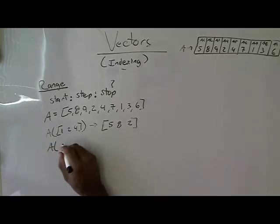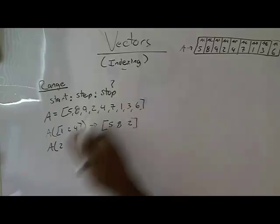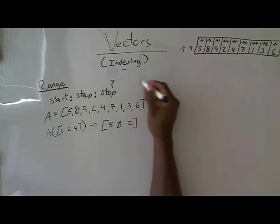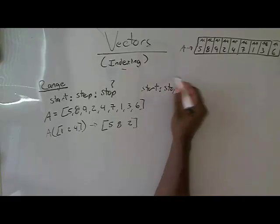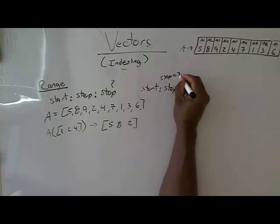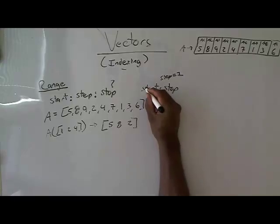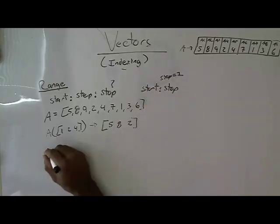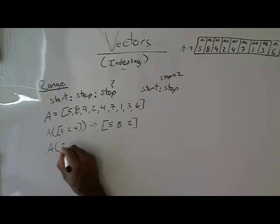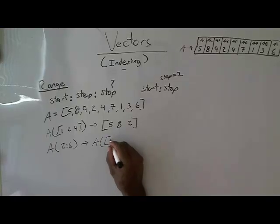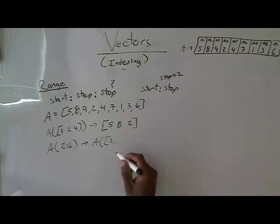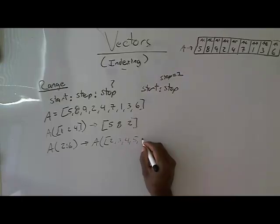What if I said give me A at—now keep in mind the other way to do the range is to do start colon stop. And that assumes that the step is equal to one. And so if I did A indexed at two colon six, that's like writing A indexed at two, start at two, stop at six, step one each. So that's like indexing at two, three, four, five, and six.